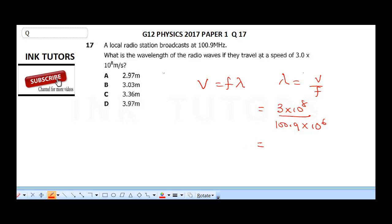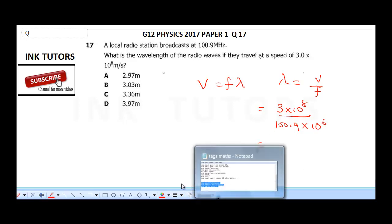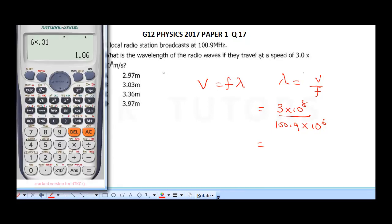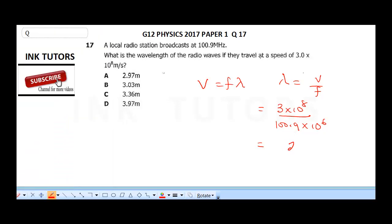So, you need to punch this with your calculator. We're going to do 3 exponential 8, divided by 100.9 exponential 6, that will give us our final answer, which is 2.97. So, the final answer is 2.97 meters. So, our correct answer here is A.